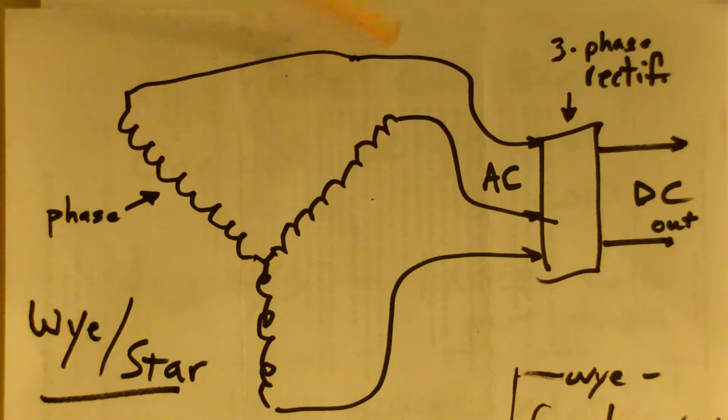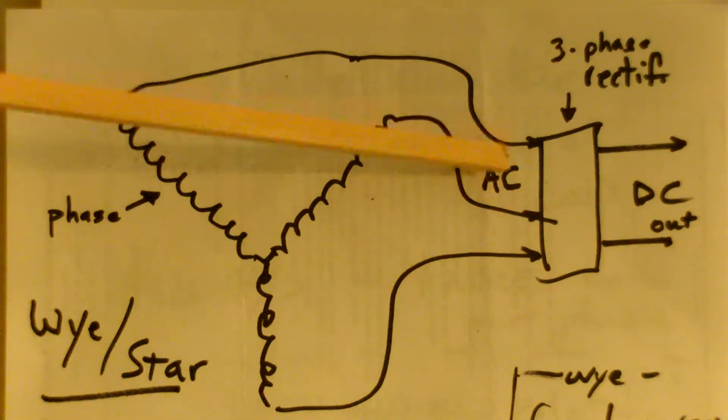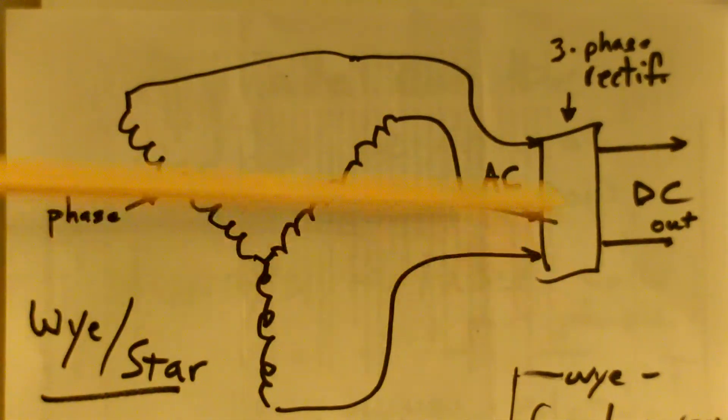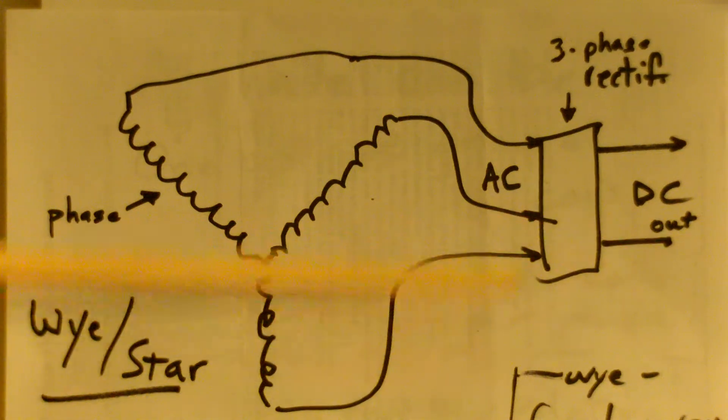Again, this AC can be measured per phase, or correctly rectified, it can be measured as the DC, converted to DC.